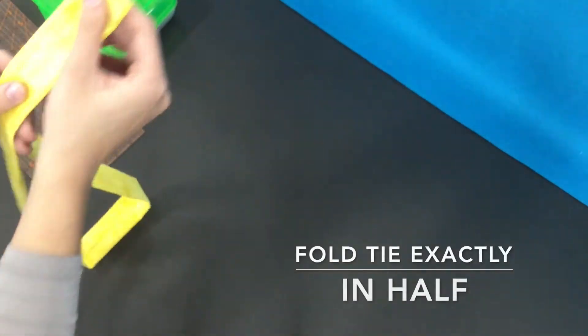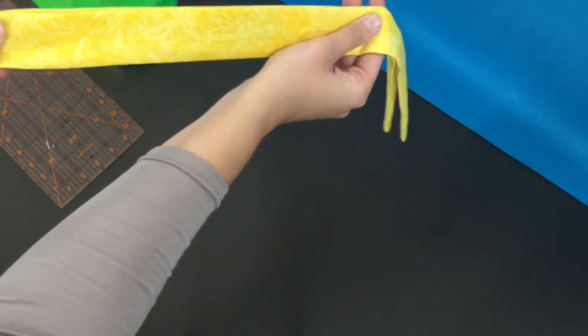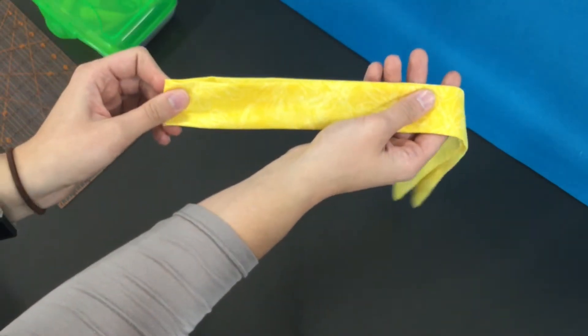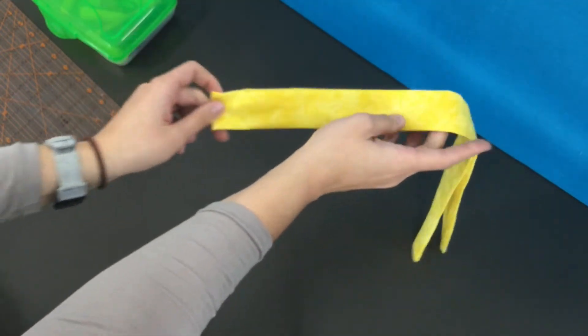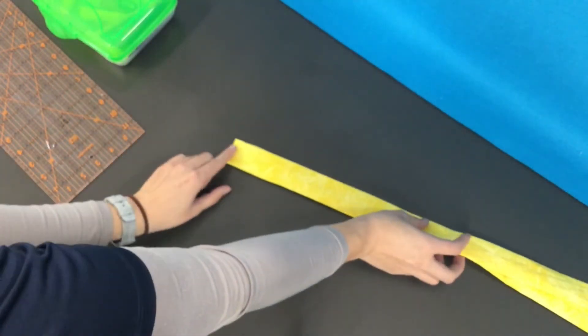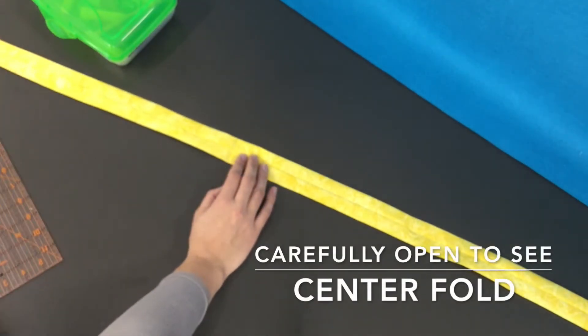Take your fabric, line up these two edges together like that. Bring it down so we have the center right here. Pinch it a little bit so you can see the fold. And then you're going to lay it down on the table here. Carefully open it. I can still see my fold there.